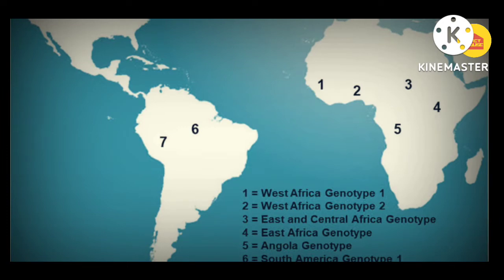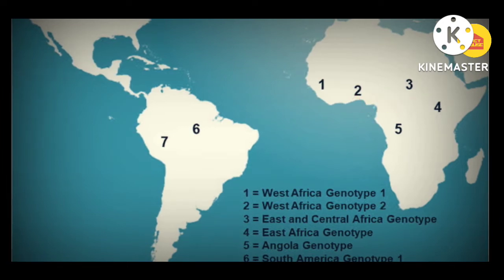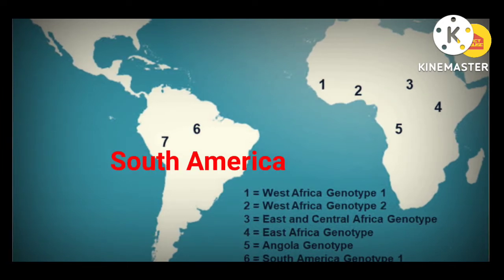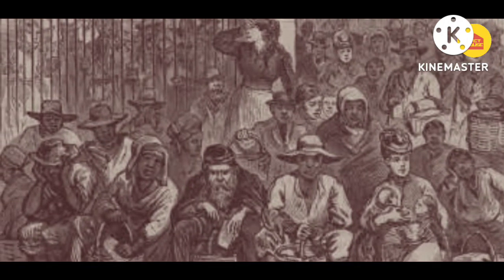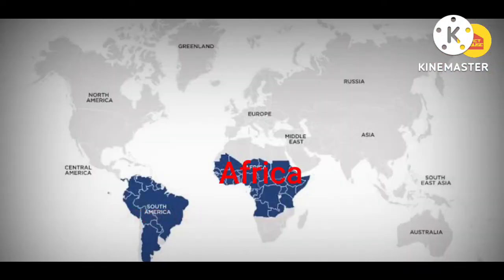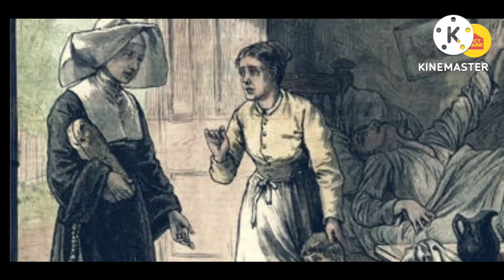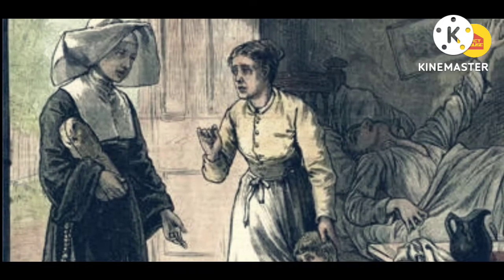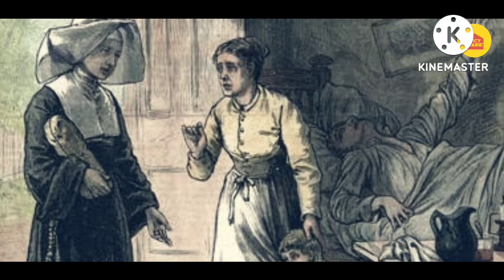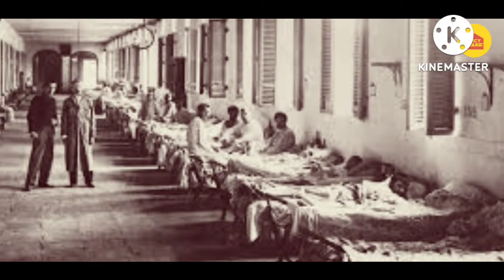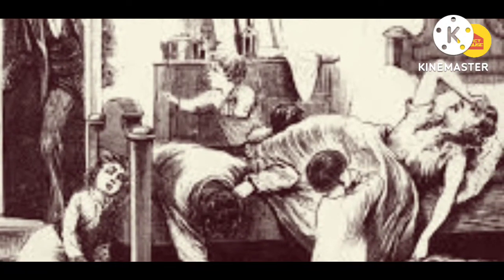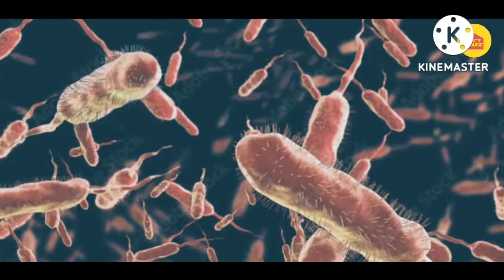This disease originated in Africa and spread to South America in the 17th century. Since then, several major outbreaks have occurred in America, Africa, and Europe. In the 18th and 19th centuries, yellow fever was considered one of the most dangerous infectious diseases, with many epidemics ravaging major cities in the U.S. and other parts of the world.